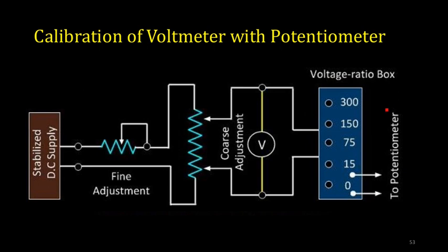An example of calibration is the calibration of a voltmeter using a potentiometer. Here the potentiometer acts as the standard with known accuracy, and the voltmeter is the device under test. This experimental setup will be covered in detail in module 3, so more time will be dedicated to its explanation then.